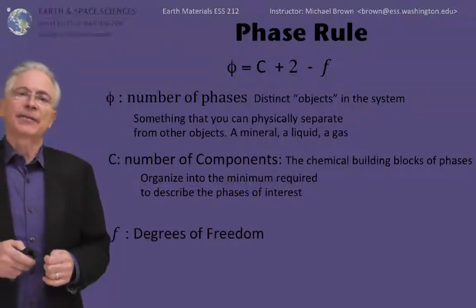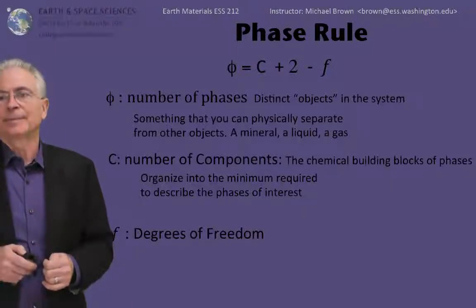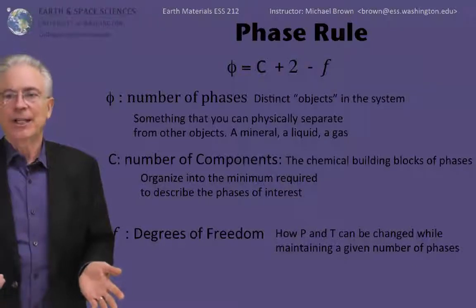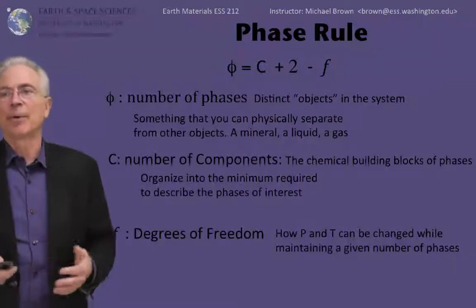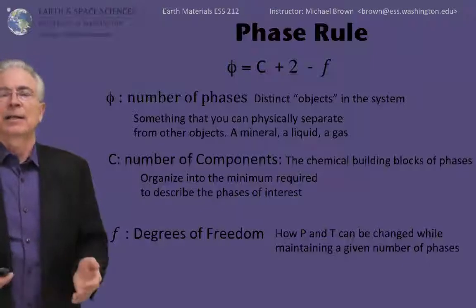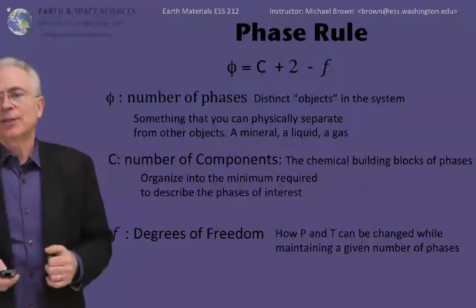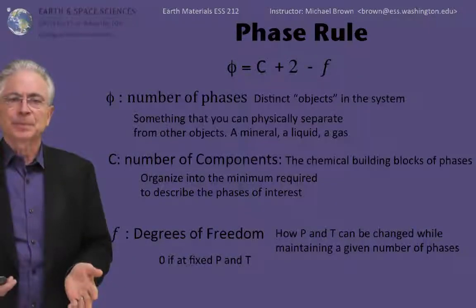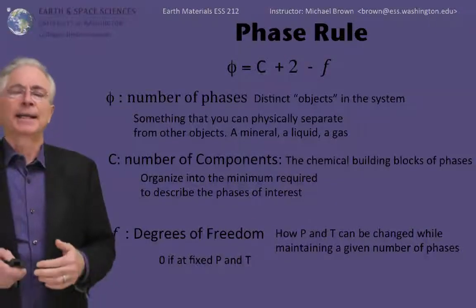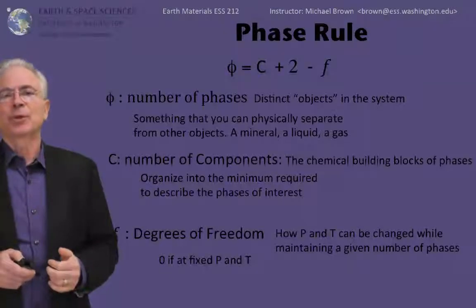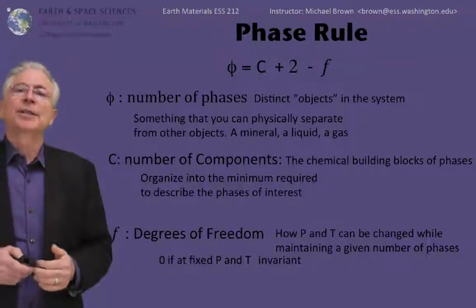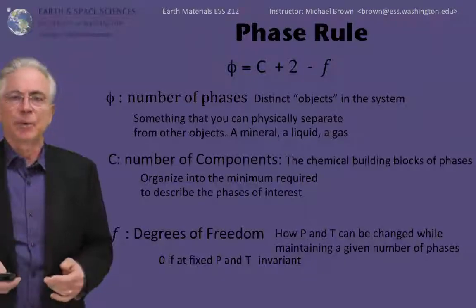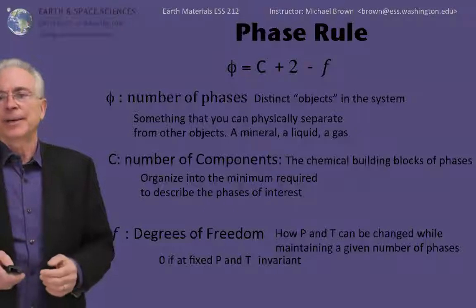Finally, F stands for degrees of freedom. And this is how pressure and temperature can be changed while maintaining a constant number of phases. We have three choices for degrees of freedom. Degrees of freedom can be zero if you are at a fixed pressure temperature point. We call this an invariant point. And we'll look at examples of invariant points in the coming slides of this video.